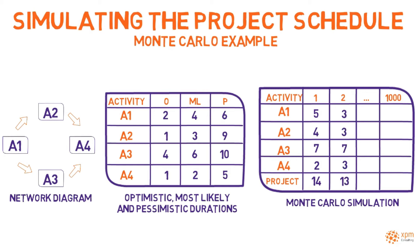On the second iteration, the method returned 3, 3, 7, and 3 weeks as the duration estimates for A1, A2, A3, and A4. The estimates were then aggregated into an overall project duration of 13. The process was repeated multiple times. For each iteration, the model returned estimates for each activity and an overall duration.